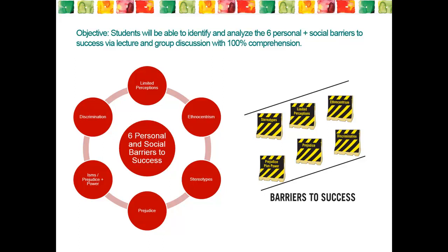Richard Butcher defines personal barriers as those individual factors that get in the way of our success, with a focus on factors that relate to diversity. These barriers include one's lack of awareness, lack of self-discipline, cultural ignorance, and underdeveloped diversity consciousness. Personal barriers can also include a person's biases and discriminatory behaviors. Social barriers focus more on society — they refer to those factors that are external to the person and impede his or her success.